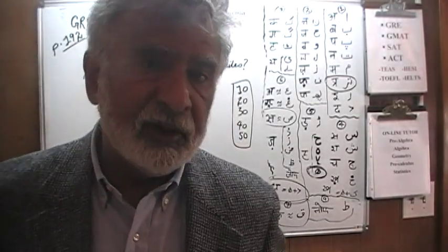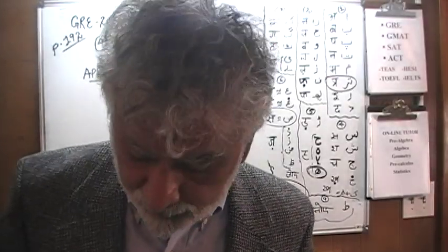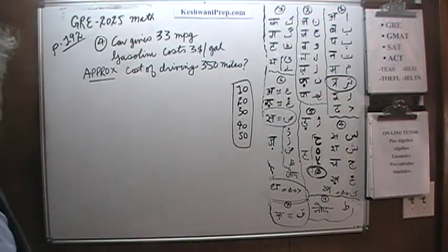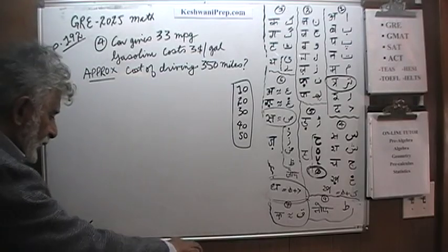Today we will do two very simple problems, very straightforward problems that appear on page number 192. Problem number 4, as you can see, is already on the blackboard. It's very straightforward.